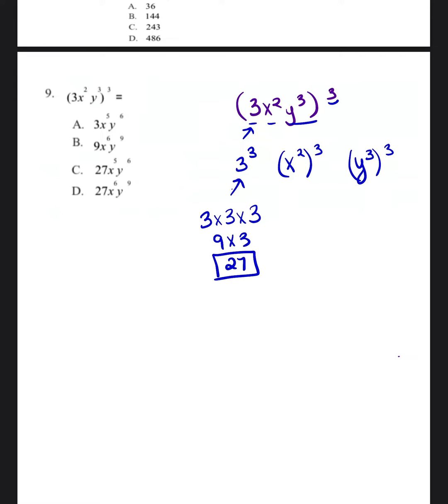So I already have my first part of my answer. So I can look at A and B and eliminate it because only C and D have 27 in the answer.